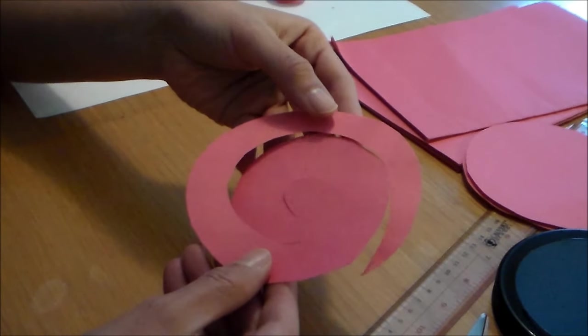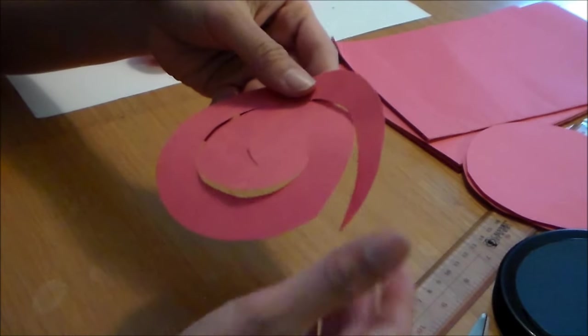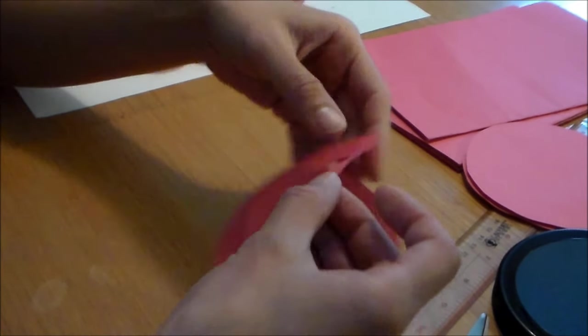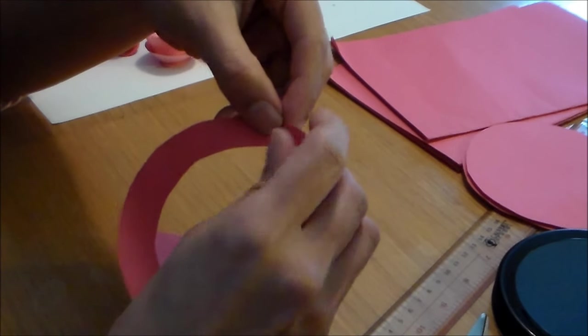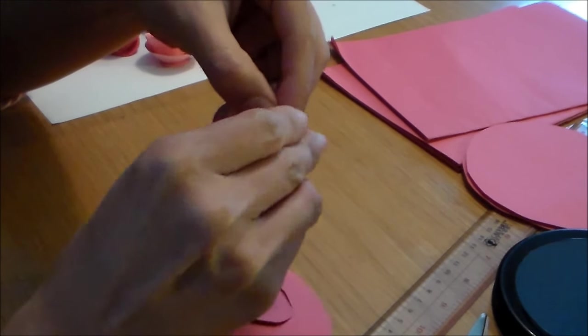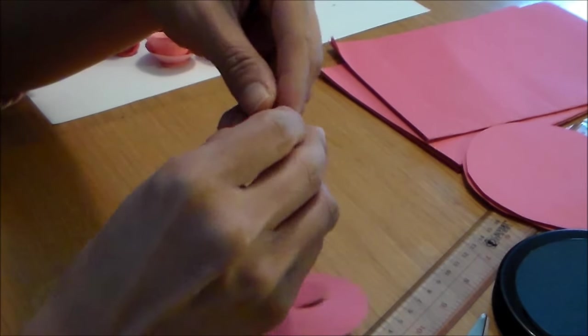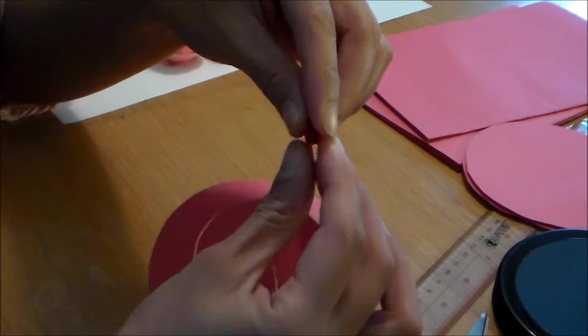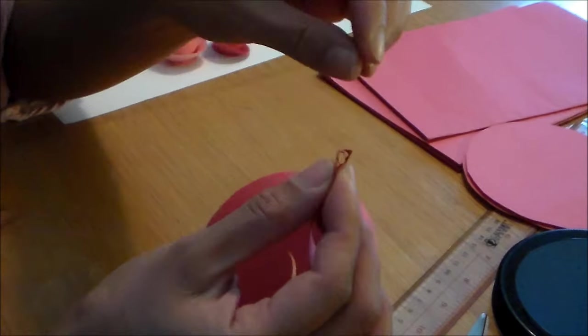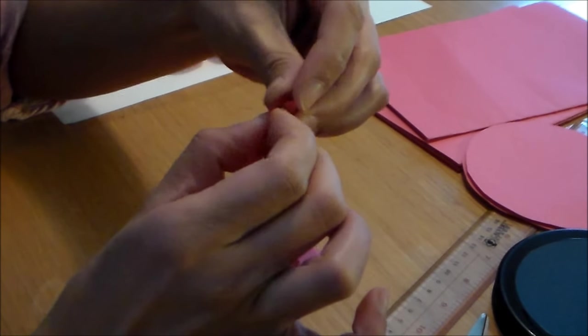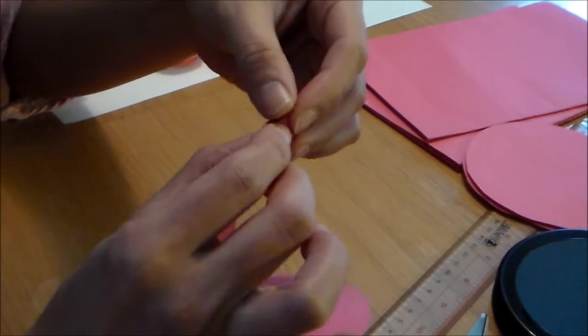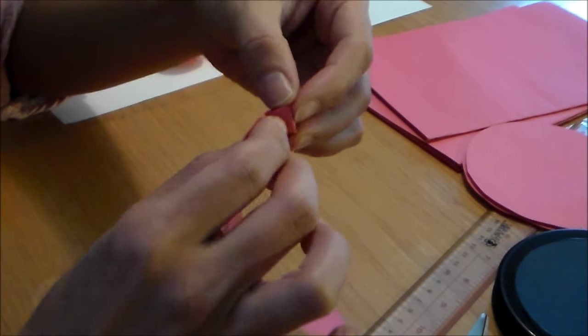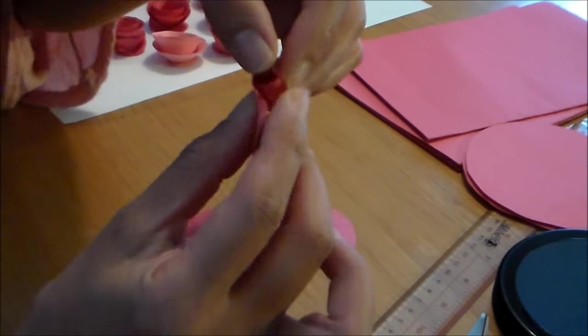When you're finished cutting your spiral, we're going to start rolling this in. You're going to start at this end. So you're going to start rolling it. You might have to fold it in. Give you a better look here. So once you have that center of your flower established, you're going to keep rolling just like so.